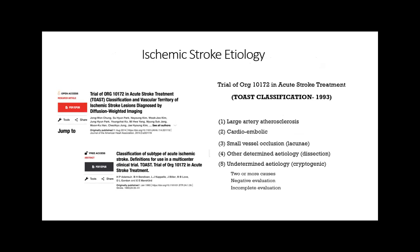The classification of stroke currently uses the TOAST classification — Trial of ORG 10172 — where strokes are defined according to their territory and diffusion-weighted imaging on MRI. Stroke can be diagnosed as large artery atherosclerosis, cardioembolic origin, small vessel occlusion such as lacunar infarcts, other determined etiology such as dissection, or undetermined etiology — cryptogenic. With cryptogenic strokes, we try to find two or more causes, but sometimes there truly isn't a cause, or the patient is discharged with incomplete workup.